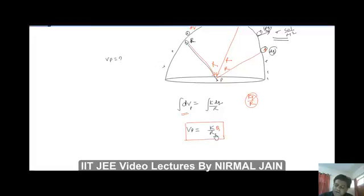So this is the potential at the center of the hemisphere where Q will be sigma into 2π R squared. So R gets cancelled with R. So this is simply 1 by 4π epsilon naught into sigma into 2π R squared.